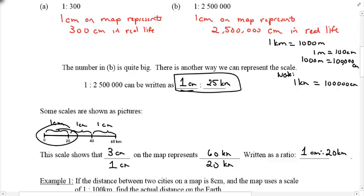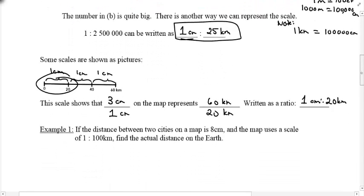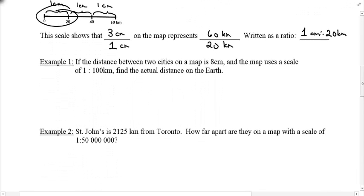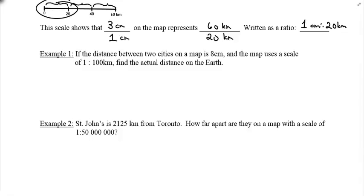Alright. So let's try some examples here, and let's see how we can apply what we learned last day to maps. If the distance between two cities and a map, that's the diagram, is 8 centimeters, and the map uses a scale of 1 to 100 kilometers, find the actual distance on the Earth. So once again, here's my scale factor. I'm going to now use 1 and 100. You can write the units if you want. In this case, I think the scale is centimeters to kilometers. Remind yourself that this is the model, or the actual drawing, or in this case the map, and this is the actual real life number.